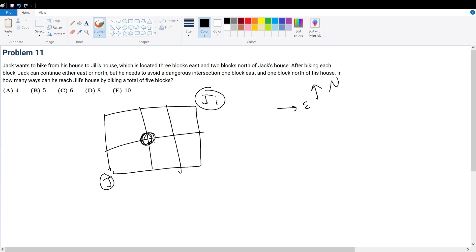And how many ways can he reach Jill's house by biking 5 blocks? Well, if he cannot go here, then effectively, what are the number of routes he can take? Well, it's just going to look like this because he cannot go here. You don't go here, here, here, here.